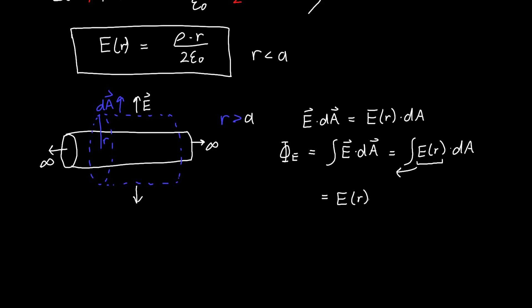So E as a function of r times integral dA over my Gaussian surface. And so this is exactly like the case where we had our Gaussian surface being smaller with r smaller than a. It's the same deal. This is still the Gaussian surface area, so this is equal to E(r) times 2π little r times the length of our Gaussian surface L. And I'm hoping that this will cancel out with something.